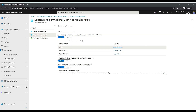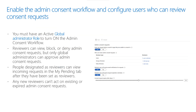Please note, you must have a Global Admin role to turn on Admin Consent Workflow settings. Additionally, please be aware that reviewers can only view, block, or deny Admin Consent requests, but only Global Administrators can approve the Admin Consent request. Please note, people designated as reviewers can view incoming requests in the My Pending tab after being set as reviewers. However, any new reviewer cannot act on existing or expired Admin Consent requests.